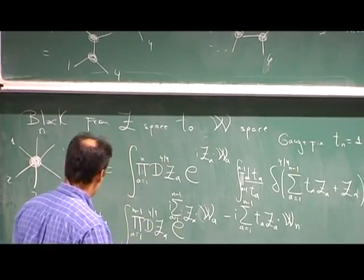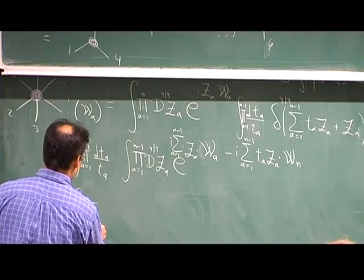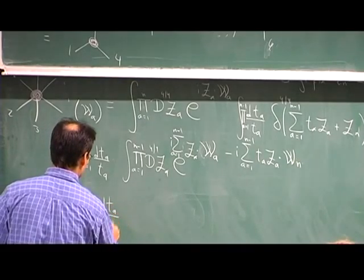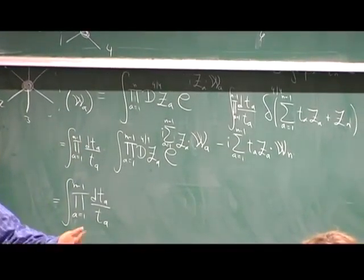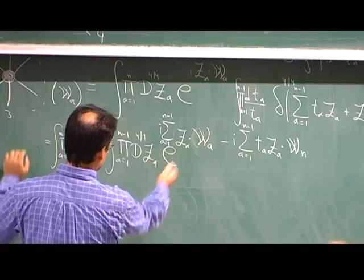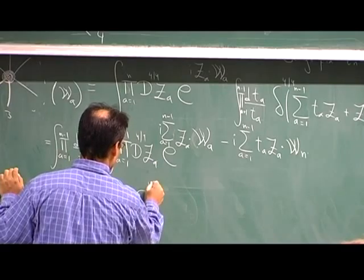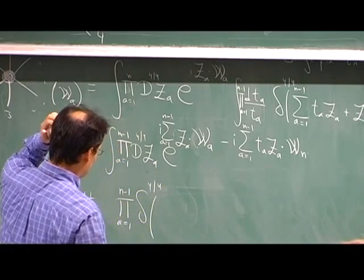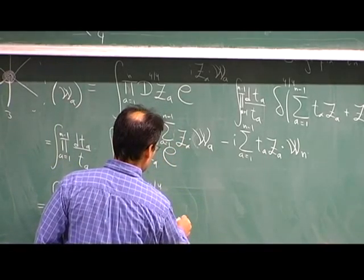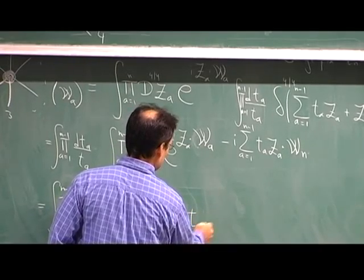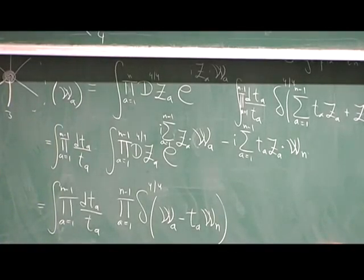So we now want to do this. What do we get? We get a bunch of delta functions — one for each integral. The delta functions are telling us that W_A has to be equal, projectively, to W_N.